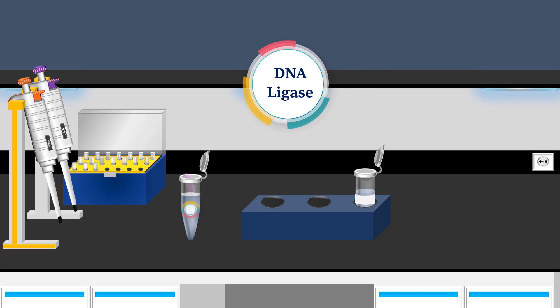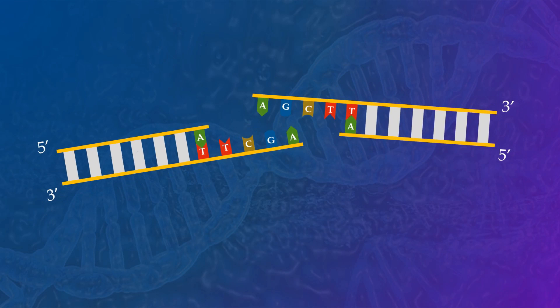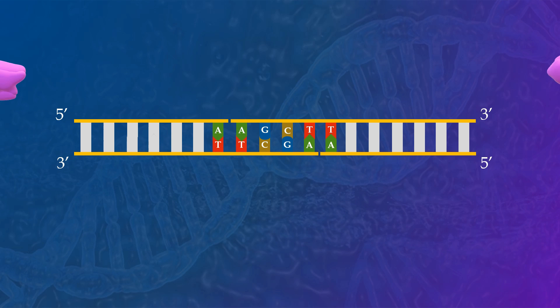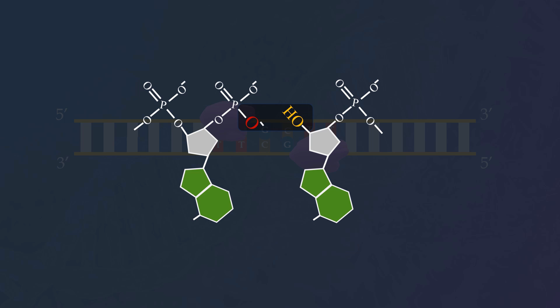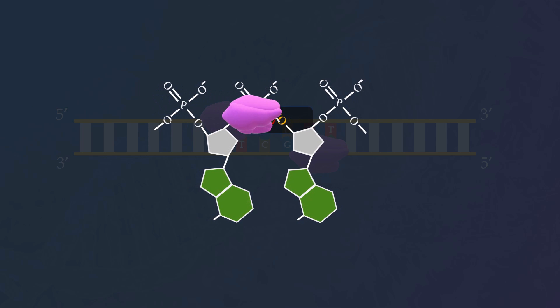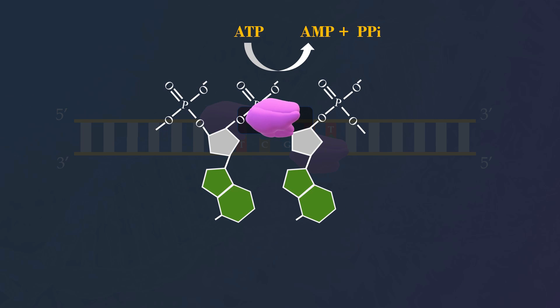For the ligation process, DNA ligase enzymes are employed. This enzyme facilitates the joining of DNA strands by catalyzing the formation of a phosphodiester bond. The formation of this bond requires a cofactor, typically ATP, which is hydrolyzed to AMP.